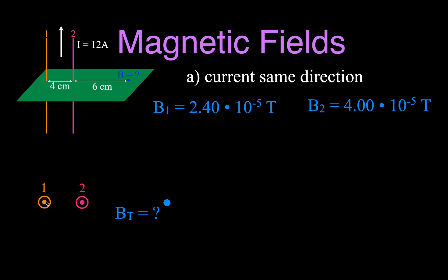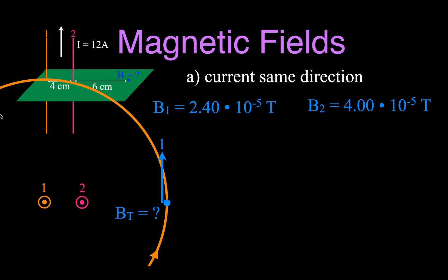We're going to use the right-hand rule. Take your thumb — the current is pointing out of the page — and grab that wire with your thumb pointing in the direction of the current, which is out of the page. If you curl your fingers, they curl in the counterclockwise direction, and that is how you determine the direction of the magnetic field. So the magnetic field from wire number one flows counterclockwise, meaning at that point it is flowing up on screen — but in the side view, rotating 90 degrees into the page, it is pointing into the page.